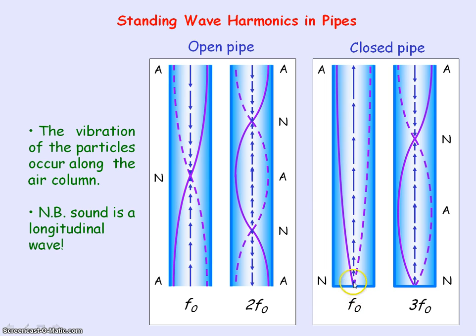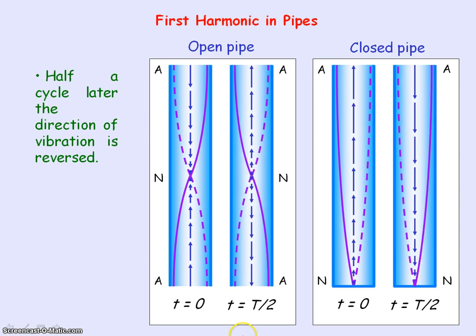For the closed pipe, the amplitude increases upwards to a positive maximum at the open end — our antinode. These diagrams also show the first harmonic in the open pipe and in the closed pipe at time equals zero, and then half a period later you can see the pattern has reversed — the direction of the vibration has reversed.